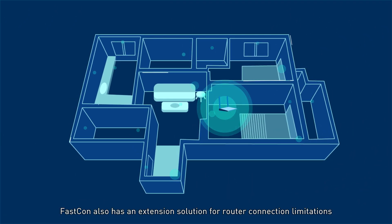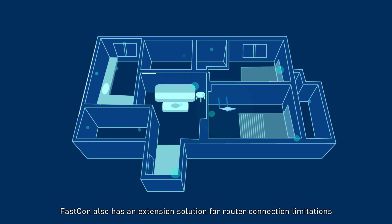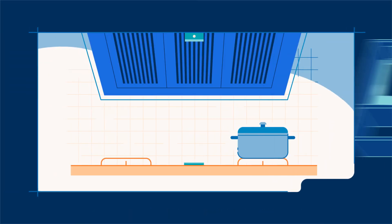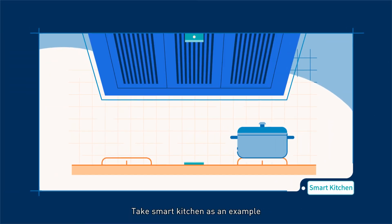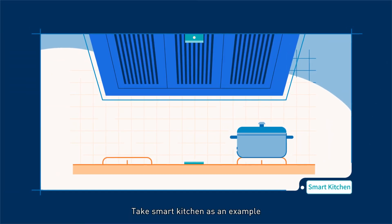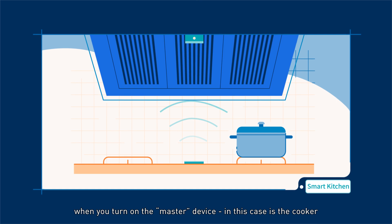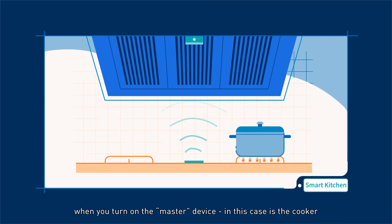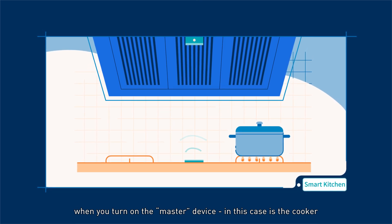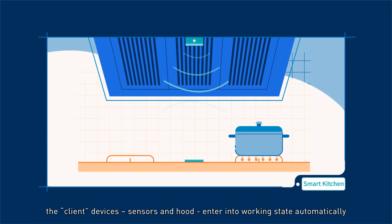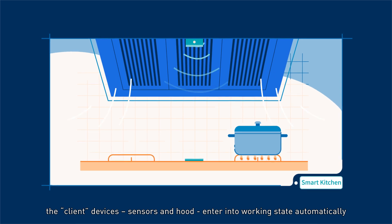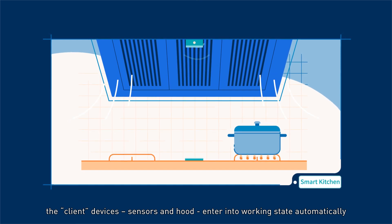FastCon also has an extension solution for router connection limitations. Take a smart kitchen as an example: when you turn on the master device — in this case the cooker — the client devices, sensors and hood, enter into working state automatically.